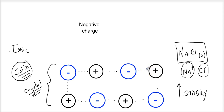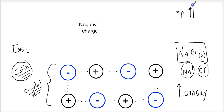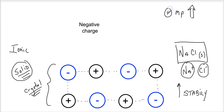The first property of ionic compounds you must know is that their melting points are extremely high. It takes a lot of energy to separate them into the liquid phase. So the melting points are extremely high. They're solids at STP or room temperature because they attract each other so strongly. The strongest forces of attraction occur in solids.